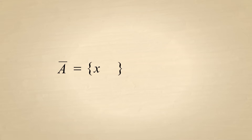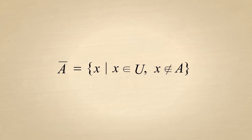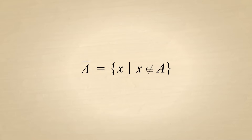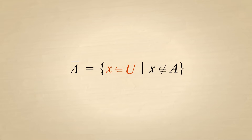Using set builder notation, we can define a set's complement formally: the complement of set A is the set of all elements X such that X is a member of a universal set U and X is not a member of A. In cases where it is obvious which set is being used as the universal set, it may be omitted from the set definition. Or sometimes you may see the statement that every element is a member of the universal set written to the left of the vertical bar.